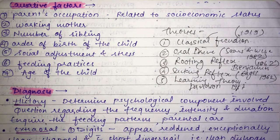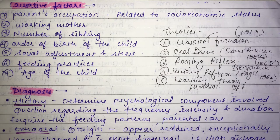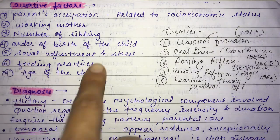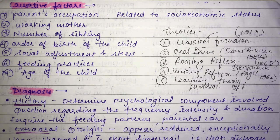The number of siblings is another etiological factor. As the number of children increases, parental attention gets divided. A child who feels neglected may compensate through this habit. Additionally, the later a sibling ranks in the family, the greater the chance of developing an oral habit. Social adjustment and stress also contribute, as digit sucking has been proposed as an emotionally-based behavior.